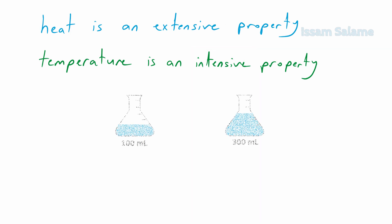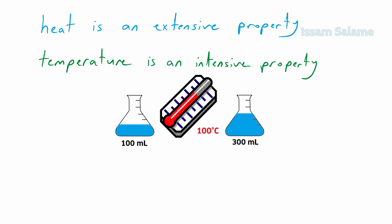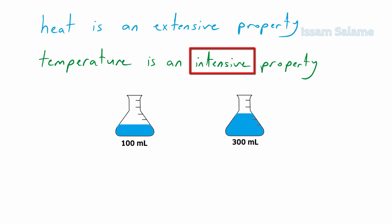Let me give you an example. Imagine that we have two flasks of boiling water - one contains 100 milliliters of water while the other one contains 300 milliliters of water. For sure, to boil the 300 milliliters of water we need more heat, so heat depends on the amount of the sample and it's an extensive property. Keep in mind that both flasks have the same temperature, which is 100 degrees Celsius, so temperature does not depend on the amount of the sample and it's an intensive property.